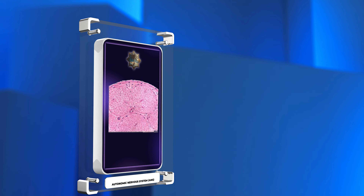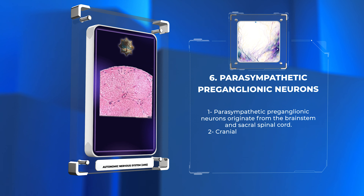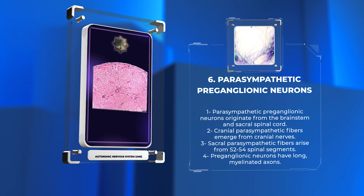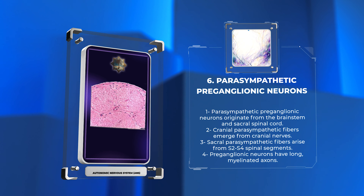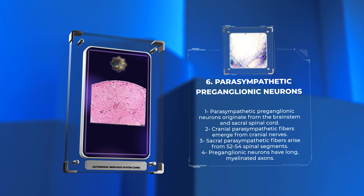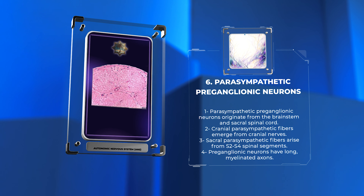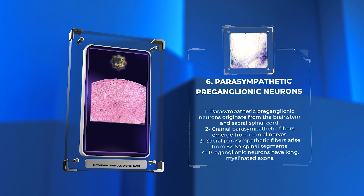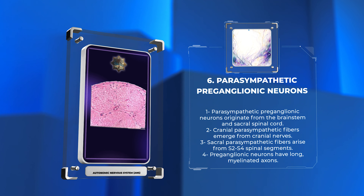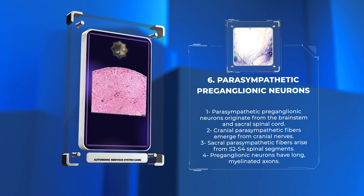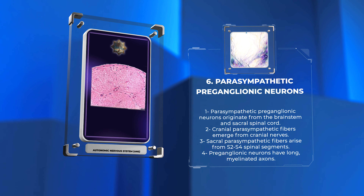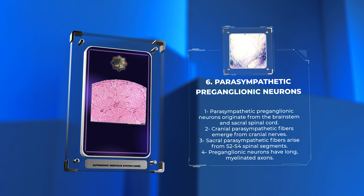Parasympathetic preganglionic neurons originate mainly from the brainstem and sacral spinal cord. Cranial parasympathetic fibers emerge from the cranial nerves, including the oculomotor, facial, glossopharyngeal, and vagus nerves. Sacral parasympathetic fibers arise from S2–S4 spinal segments. These preganglionic neurons extend long, myelinated axons to synapse with postganglionic neurons located in peripheral ganglia.